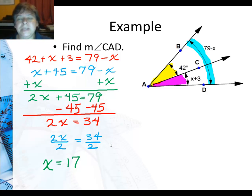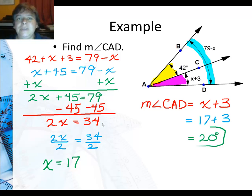Well, you would be tempted to stop here, but what did I ask for? I asked for the measure of this pink angle, CAD. So I write down what it is, x plus 3, and I take this x and substitute it in for x, which gives me 20 degrees. So the measure of angle CAD is 20 degrees.